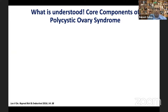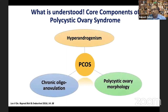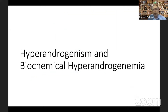What we know today is that there are three important components to PCOS: hyperandrogenism, chronic oligo-anovulation, and polycystic ovarian morphology. These three components are present in variable degrees. Let me briefly discuss each of these aspects before going on to the diagnostic criteria.